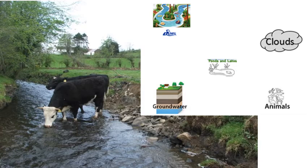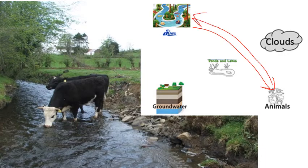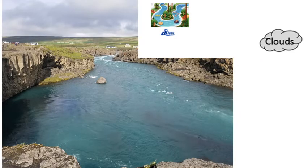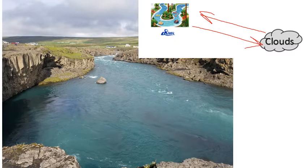Where else can water from a river go? Here I've got a cow drinking the water — the water in that river now becomes part of the cow. Any place where we can find water has to be part of this map, so I'm drawing an orange arrow from rivers to animals. That's orange because water from an animal can go right back into the river. That cow is just as likely to pee right where he is, and the water passes right back into the river.